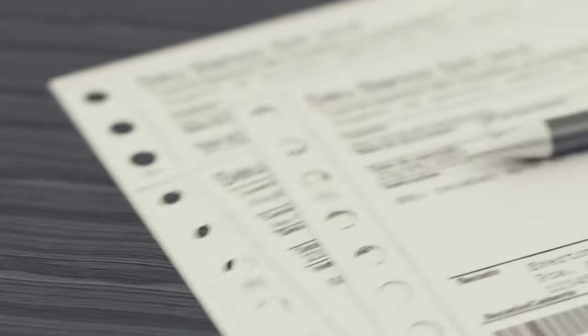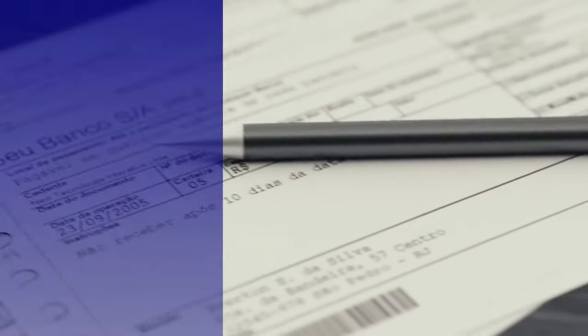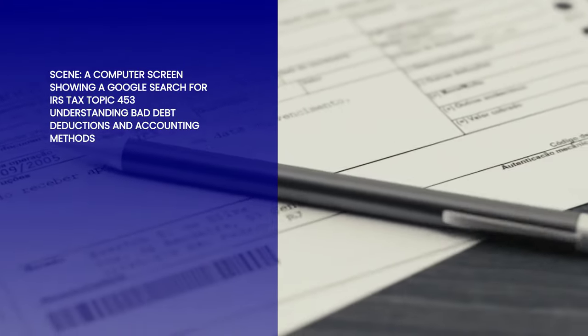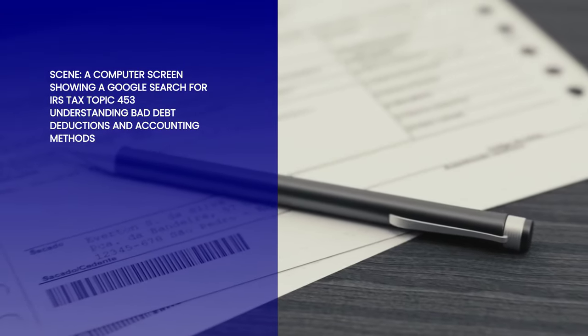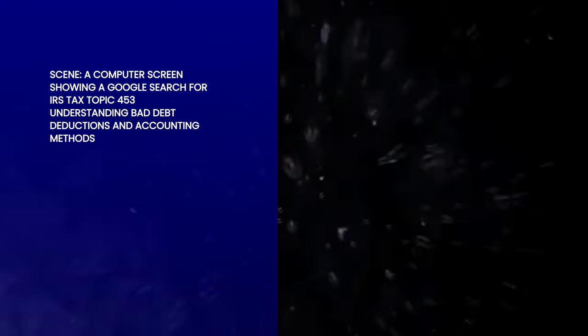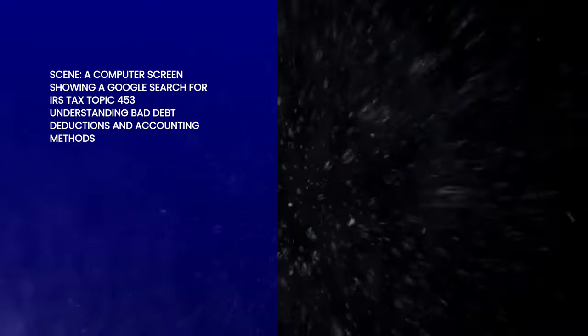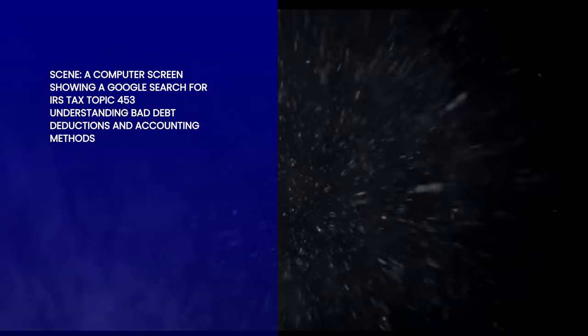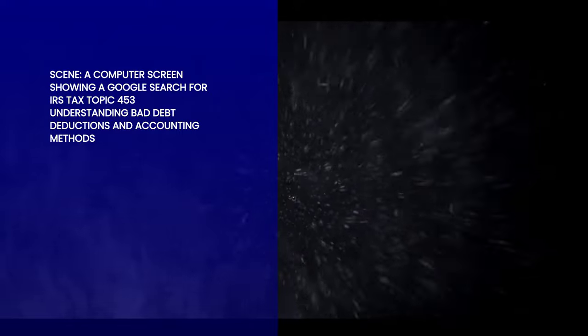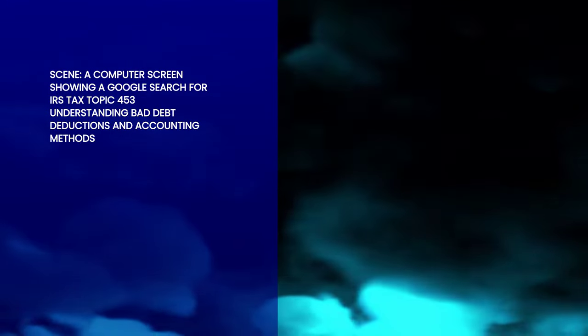We will first do a Google search for IRS tax topic 453. You will find it explains the following information: if someone owes you money that you can't collect, you have a bad debt.